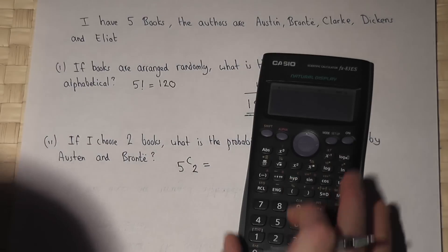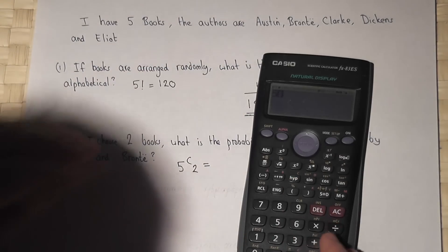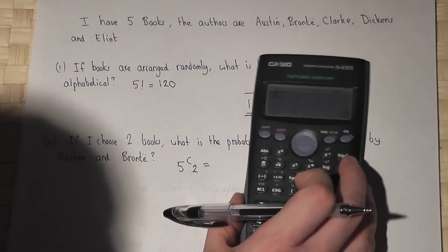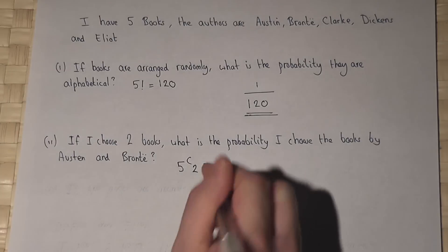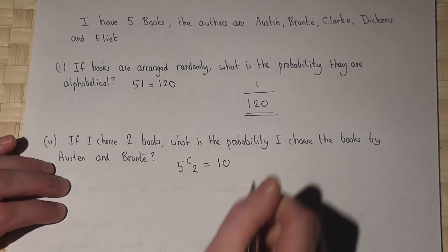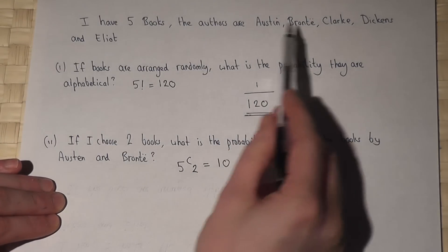If I work out five C two, I get ten. So there are ten ways of choosing two books out of the five.